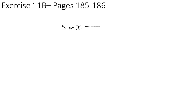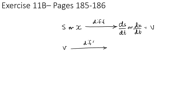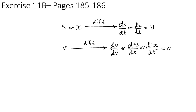As a reminder: we start with displacement (s or x). Differentiating gives ds/dt or dx/dt, which is velocity. Differentiating velocity gives dv/dt, or equivalently d²s/dt², which is the acceleration. You can differentiate displacement twice to go directly to acceleration.